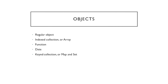Primitives are called primitive because their values contain only a single thing, be it a string or a number or whatever. In contrast, objects are used to store keyed collections of various data and more complex entities. In JavaScript, objects penetrate almost every aspect of the language, so we must truly and deeply understand them first before going in-depth anywhere else.